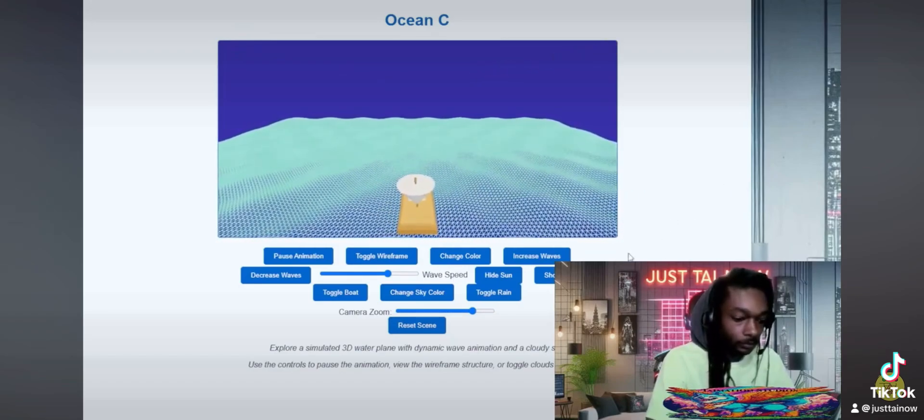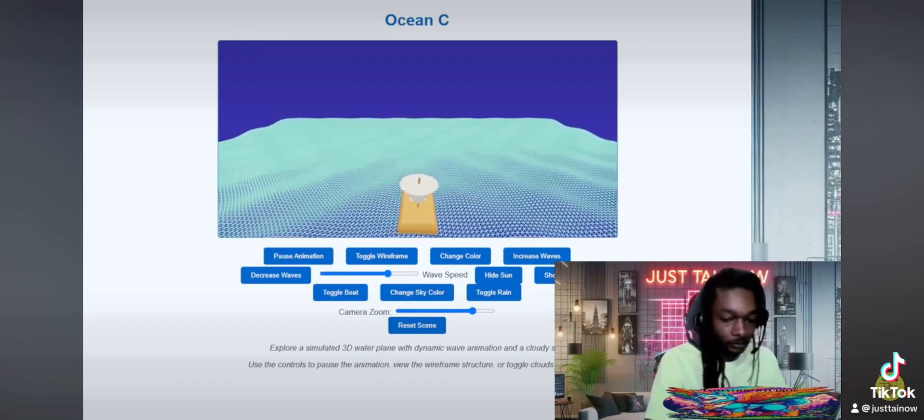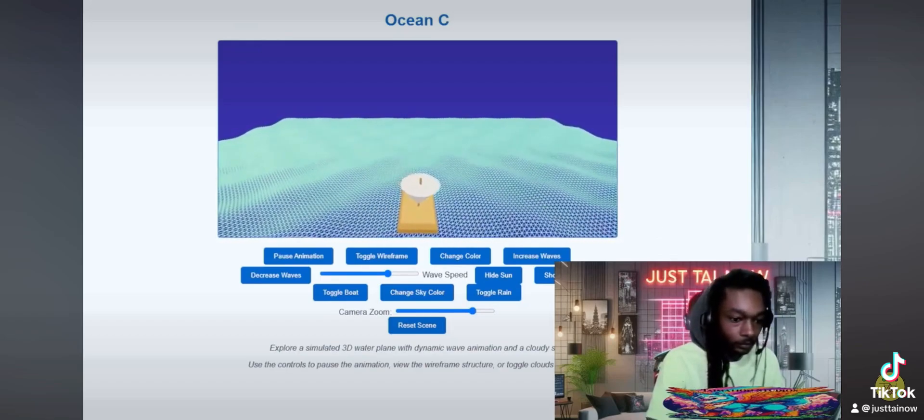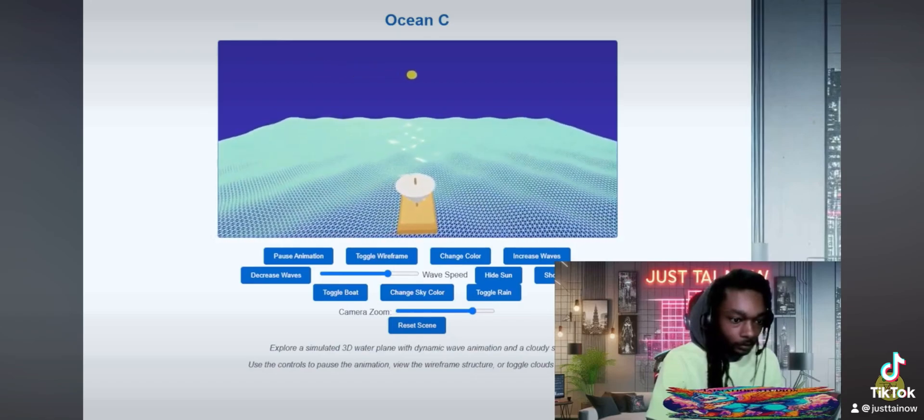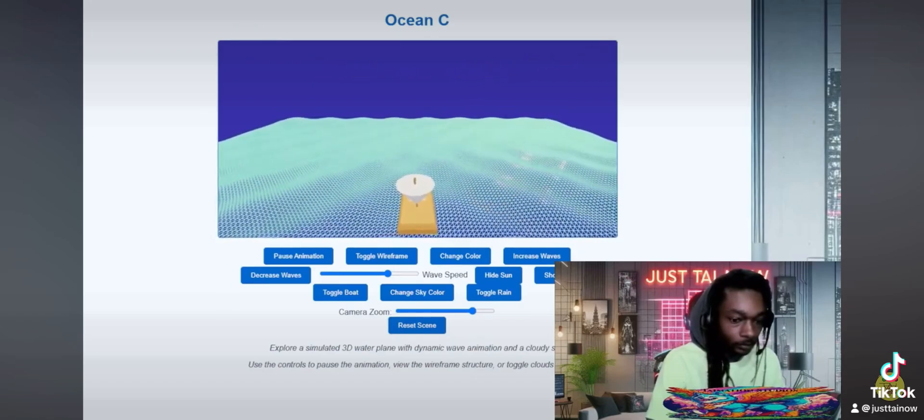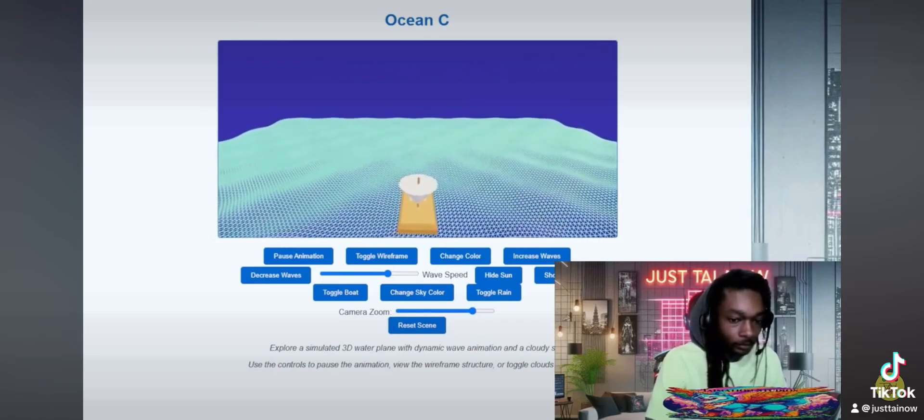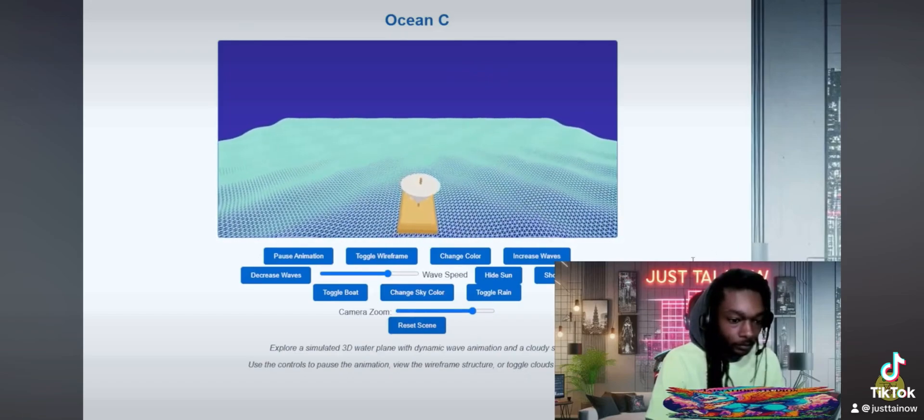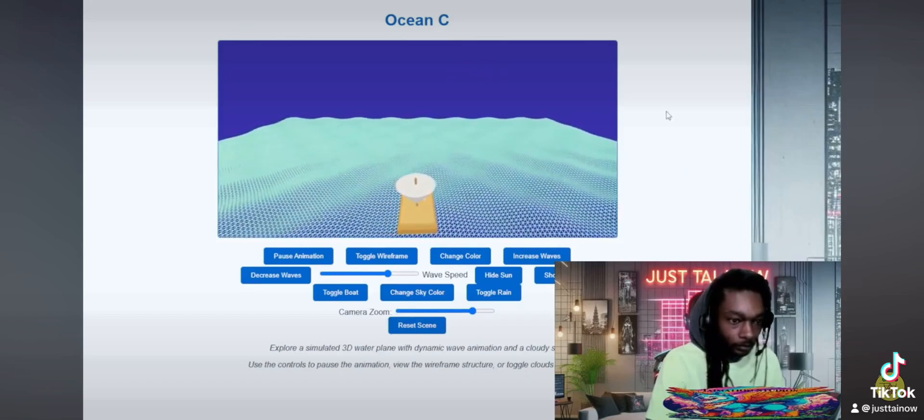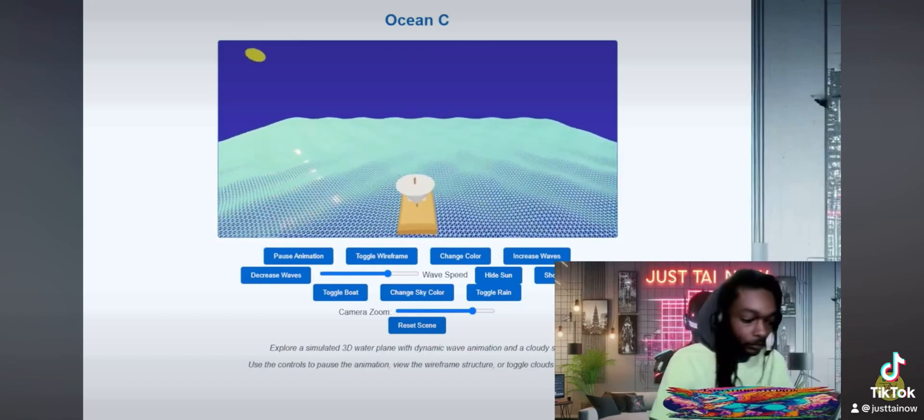He even rejects those first two bachelorettes that the magic mirror shows him. It's like he's shopping for a princess based on this checklist instead of actual connection. It's not about genuine feelings or love. It's all about appearances and control.